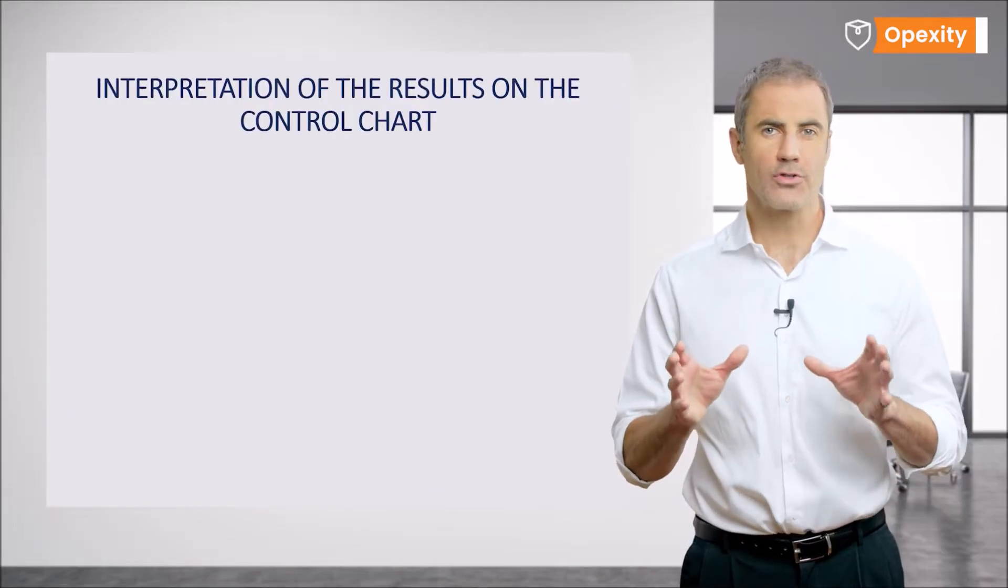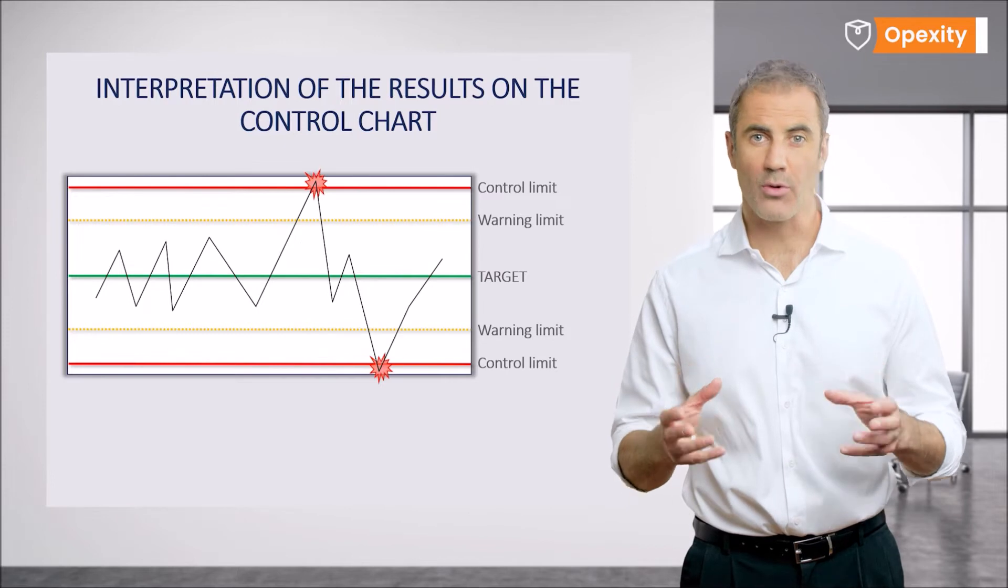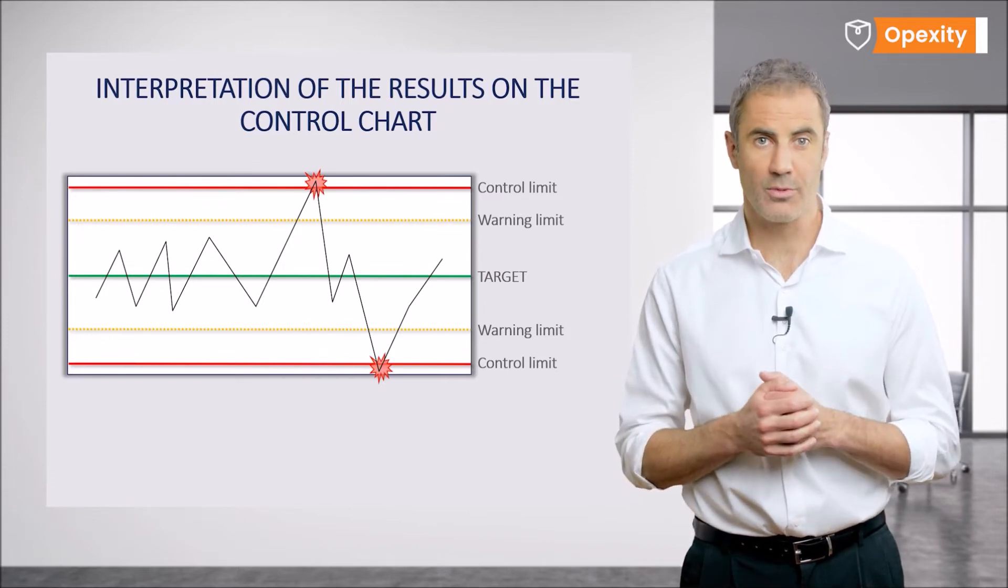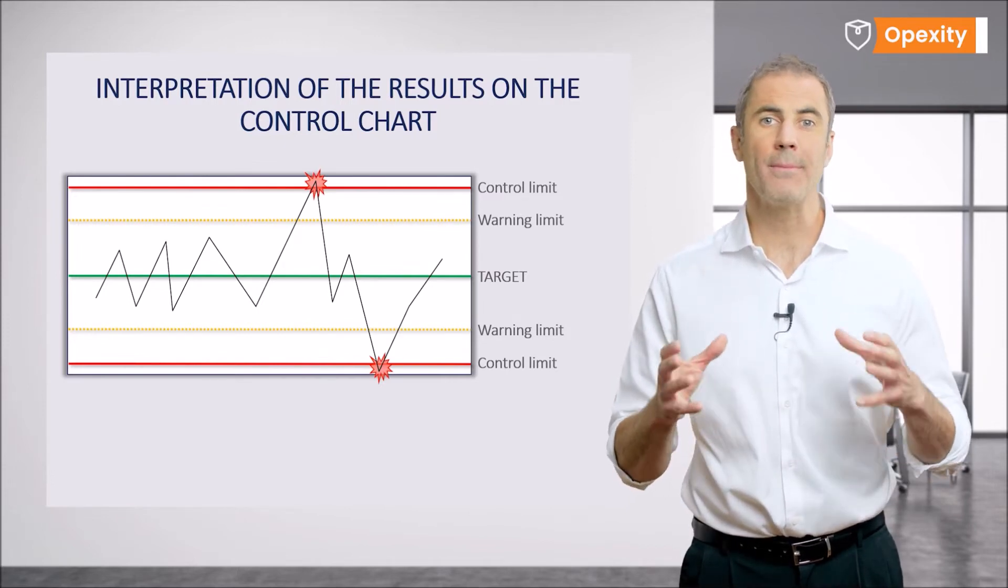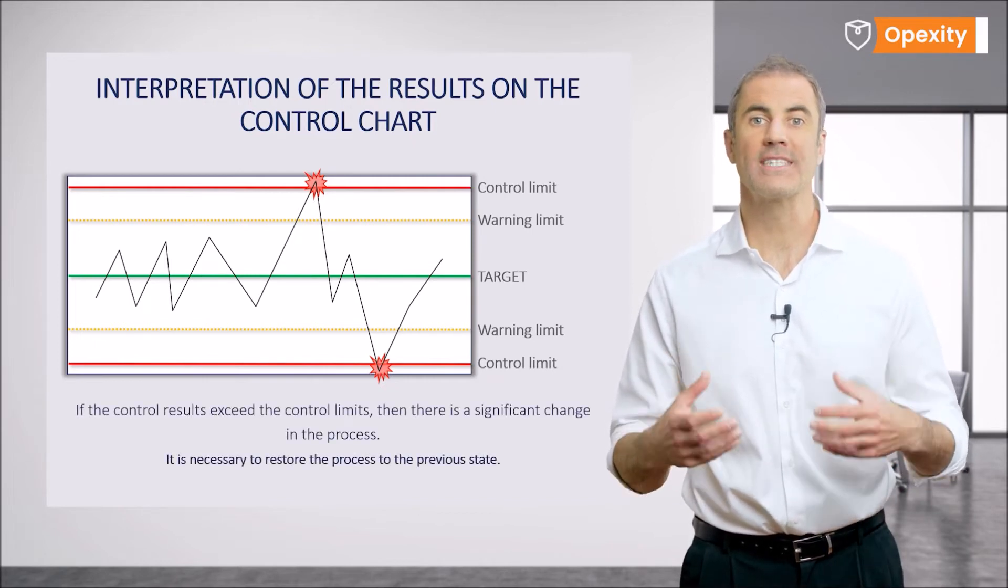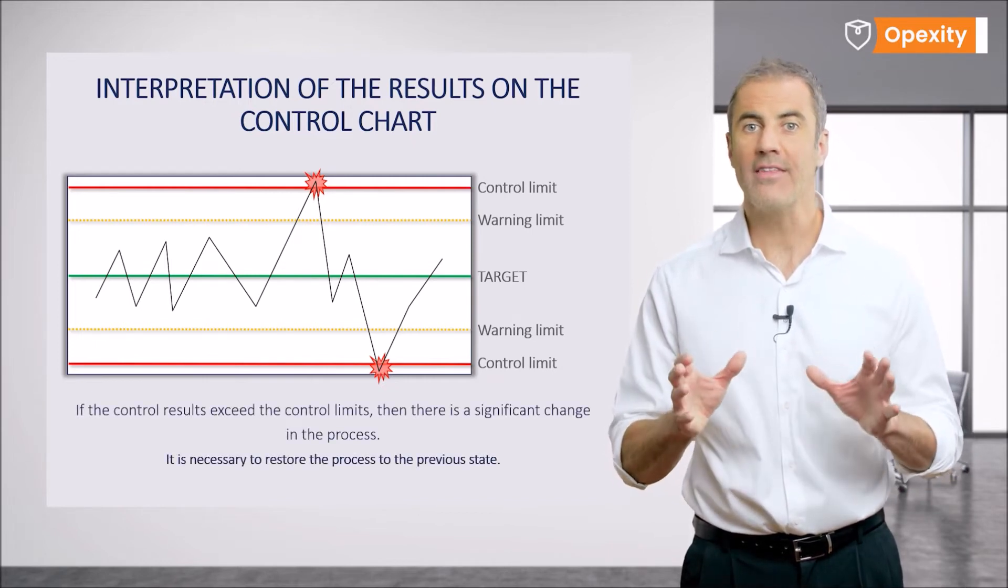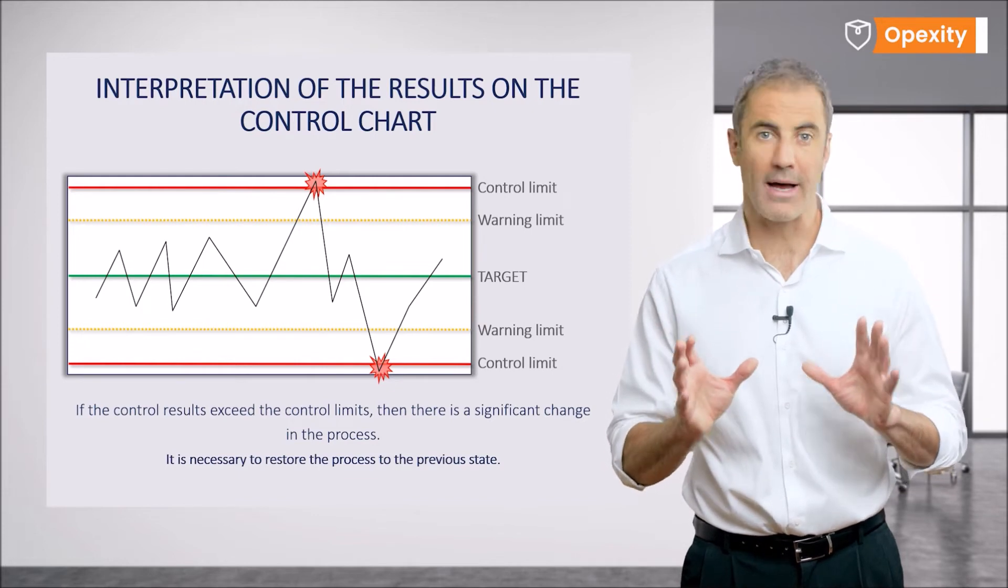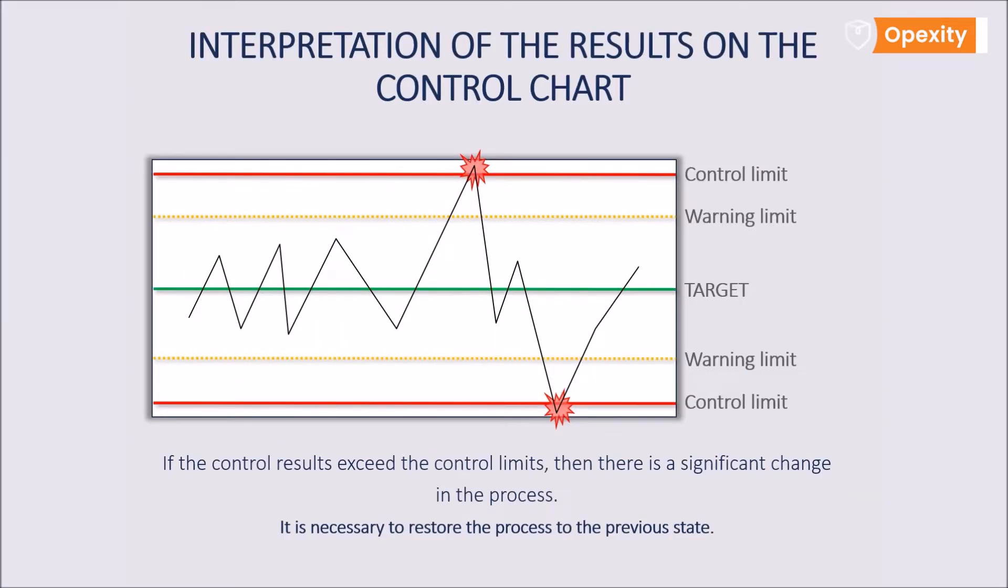If the control limits are exceeded, this is readily visible on the chart and the person supervising the process should immediately take action because it means that the process is running away and that there is a quality control problem at hand or that some special factor disturbing the process has occurred.